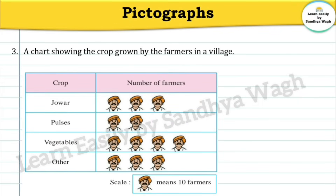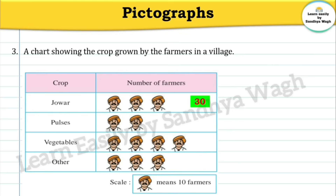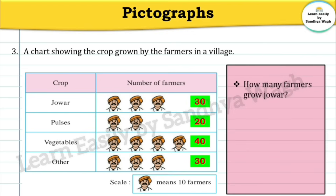Now our third question: A chart showing the crop grown by farmers in a village. The scale is: one farmer symbol equals 10 farmers. Jowar — counting the symbols: 10, 20, 30 — so 30 farmers grow jowar. Pulses — 20 farmers grow pulses. There are also vegetables and other crops shown. The first question related to this chart: How many farmers grow jowar?